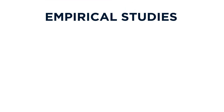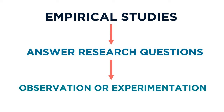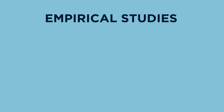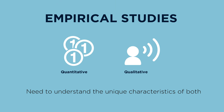The goal of an empirical study is to answer research questions through observation or experimentation. Empirical studies can be quantitative or qualitative, and it's important to understand the difference. In this video, we'll explore characteristics of quantitative and qualitative scholarly articles in order to understand these different approaches to research.